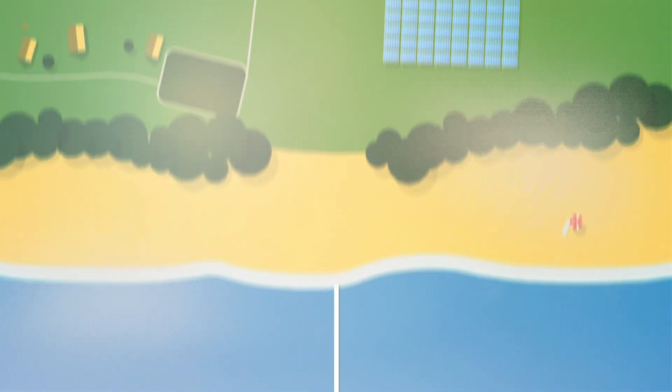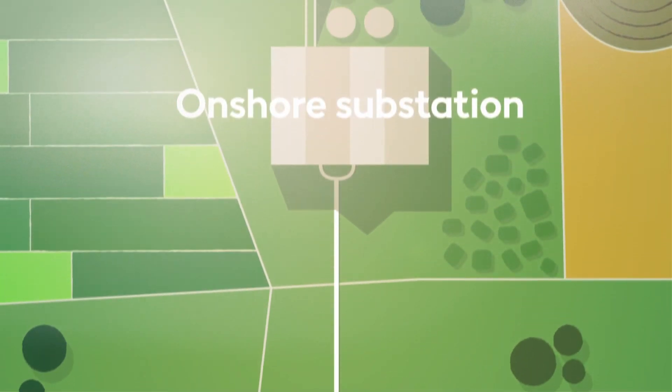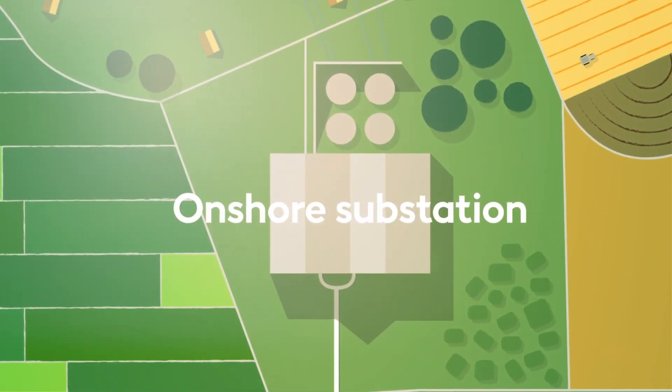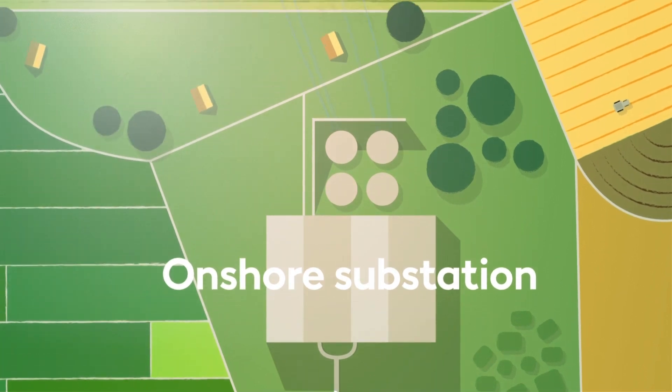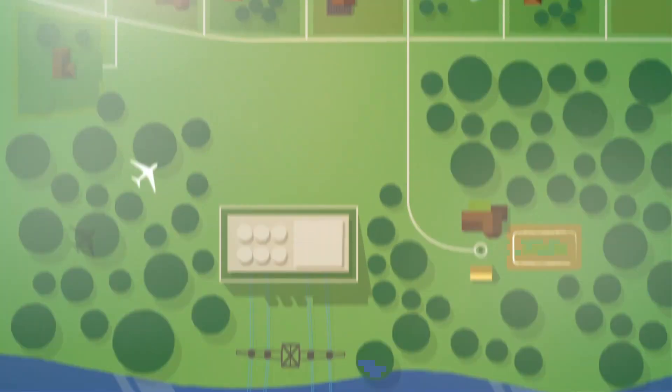Once inland, the electricity is transformed at the onshore substation and fed into the public grid, where it is ready to power the lives of millions of people.